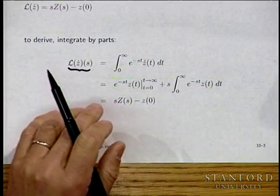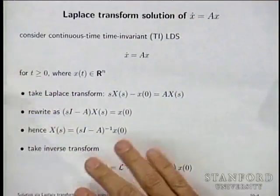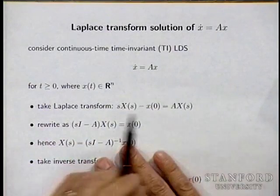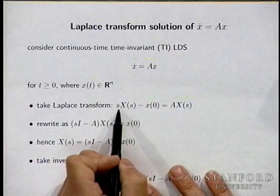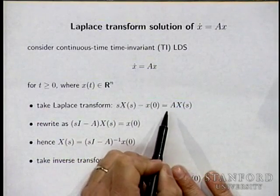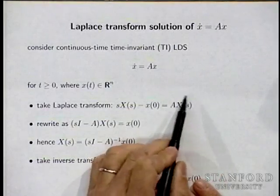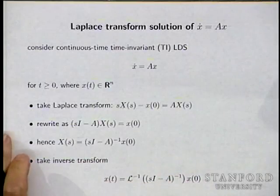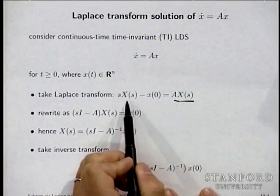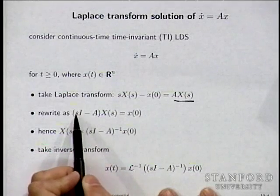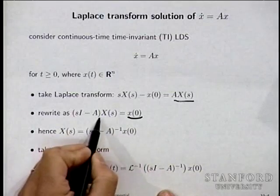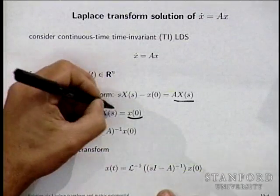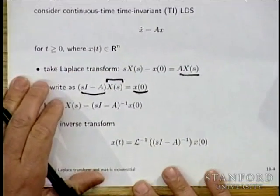Now we can very quickly solve x_dot equals Ax — an autonomous linear dynamical system. We take the Laplace transform on both sides. On the left-hand side, these are all vectors, so I get S times capital X of S minus X of zero, and that equals A times capital X of S. Collecting terms, I write this as (SI minus A) times capital X of S equals X of zero. I've isolated what I know from what I want.